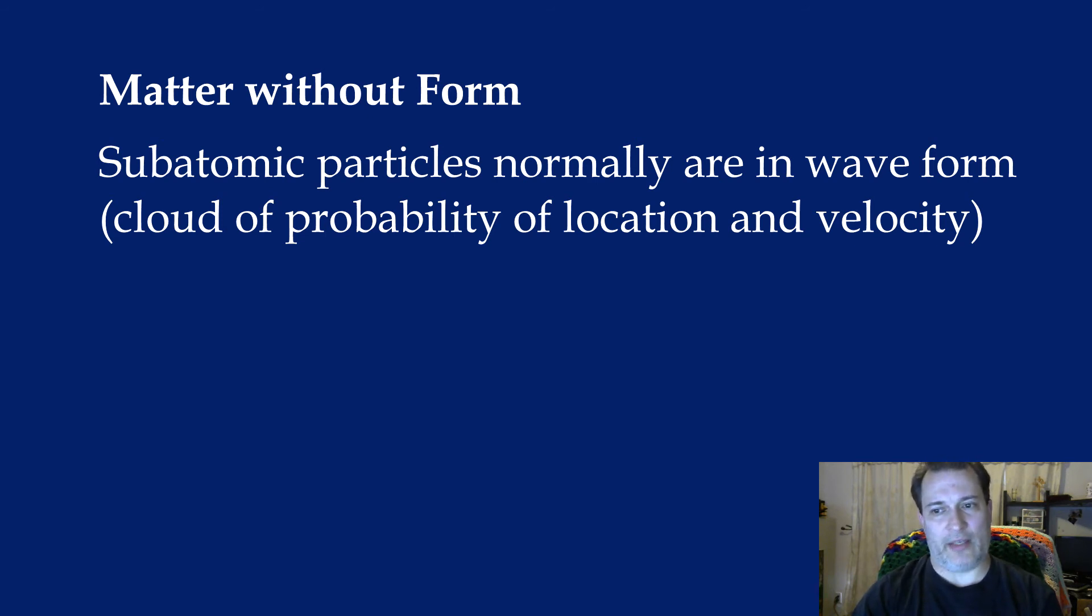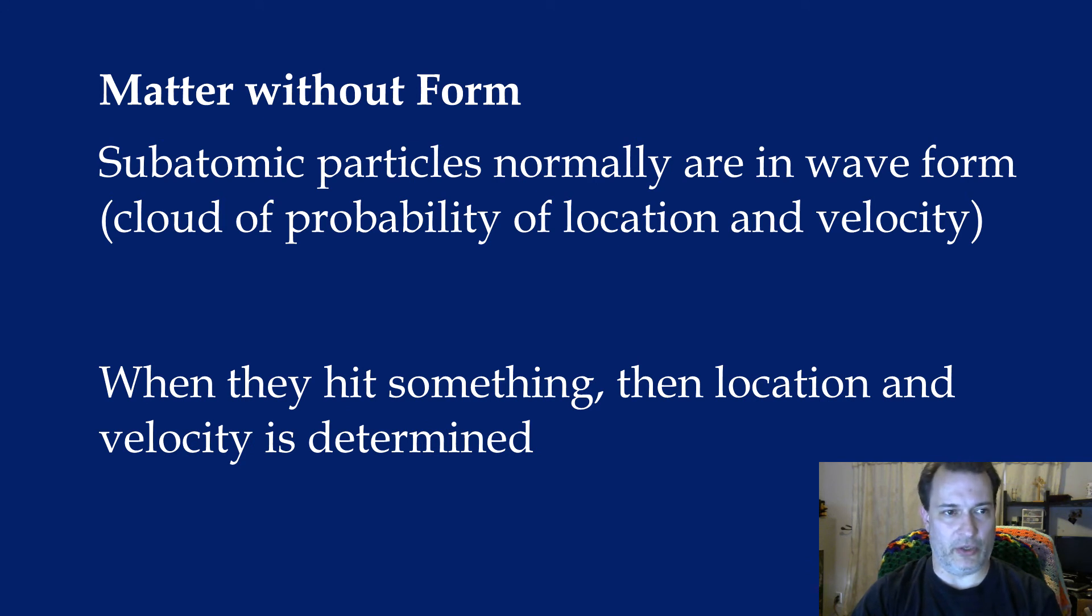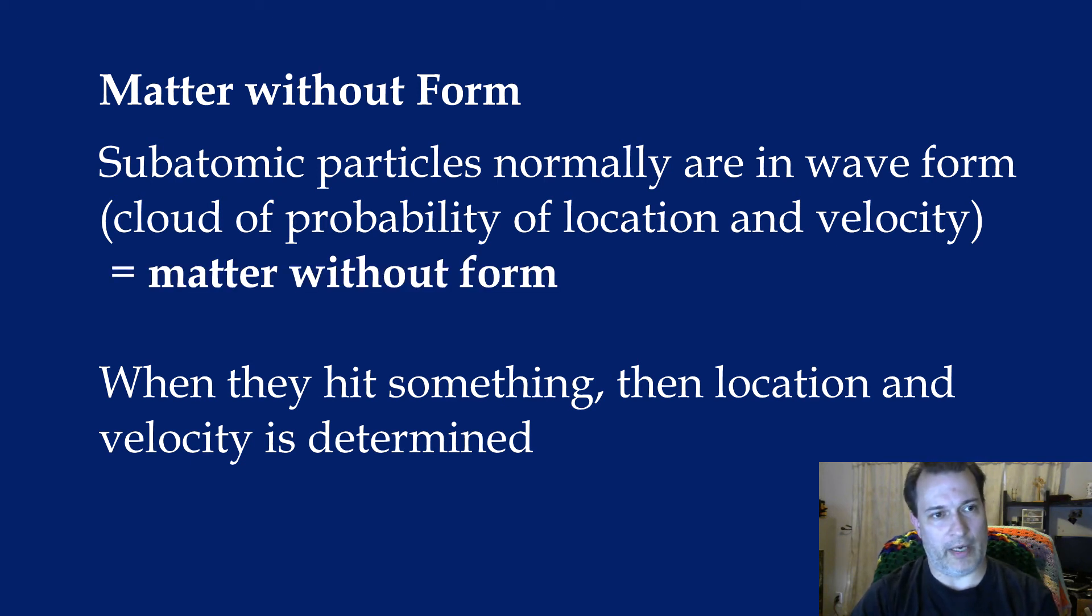And then when they actually hit something, then the position and velocity is determined. And I mean determined, not discovered. And that's because the exact position and velocity don't exist until it's determined when you actually hit something. So we're going to take that and use our philosophical terms to describe that particle. All right, so when a particle is flying through space normally, that particle has matter but no form. It has no form because we don't know its position or velocity. But when it hits something, it has both matter and form.